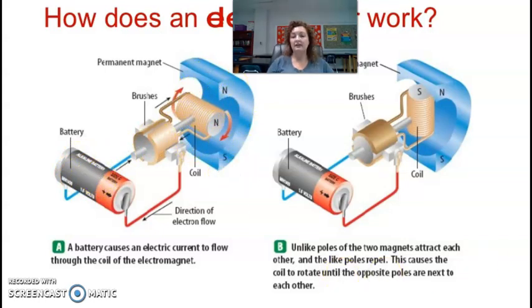So it says, unlike poles, of the two magnets attract each other and the like poles repel. Because we know like repel, we know opposites attract, right? North and south. So this causes the coil to rotate until the opposite poles are next to each other.